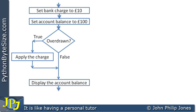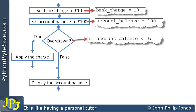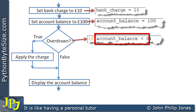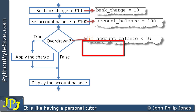The flowchart gives us all the steps for the program. In Python, setting the bank charge looks like: bank_charge = 10. The next step assigns account_balance = 100. To ask if we're overdrawn in Python, it looks like: if account_balance < 0: — note the colon. The key part is account_balance < 0. On this occasion it's 100, so we're asking is 100 less than 0 — clearly it is not, so that is false, and we follow the false route.